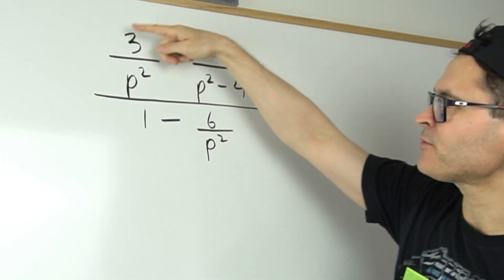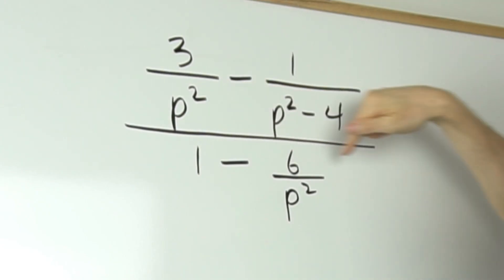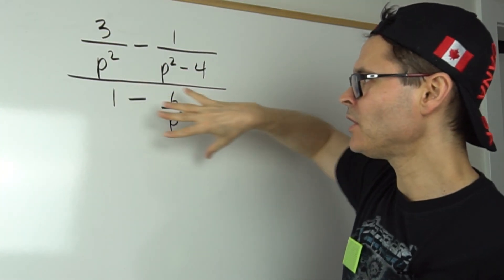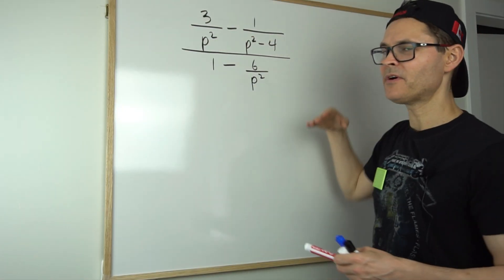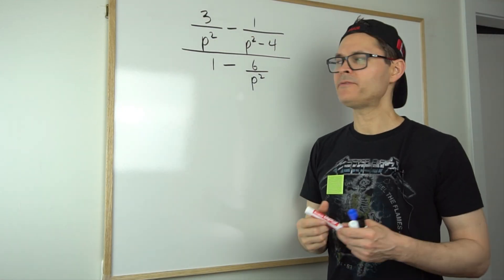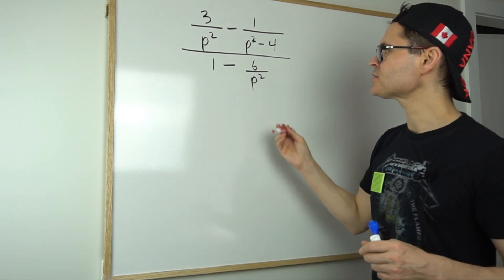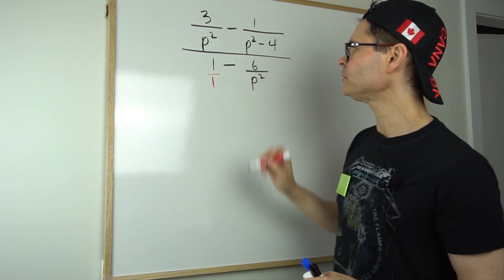Notice I've got a fraction minus a fraction divided by some other fractions, so conceptually I could add the top, add the denominator, and then do a divide, which would be fine. There's nothing wrong with that, but there is a faster way to do it, which is to recognize all of the little denominators.